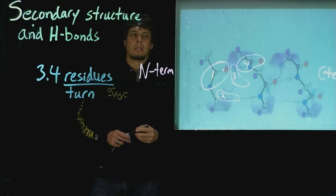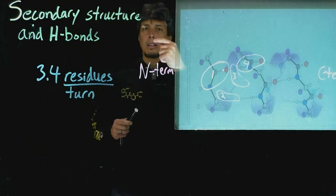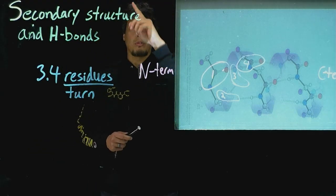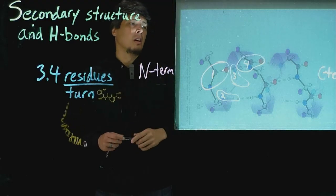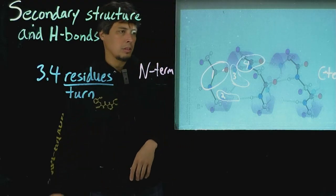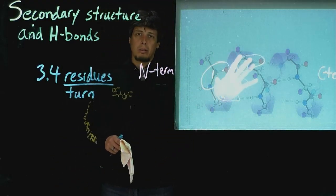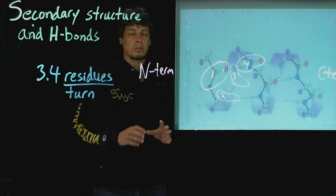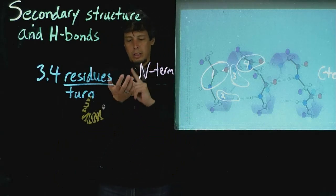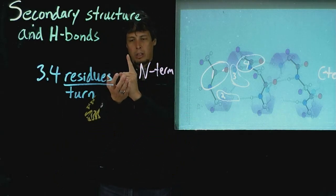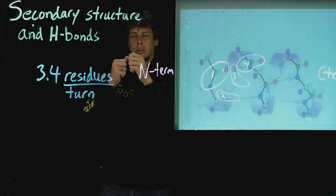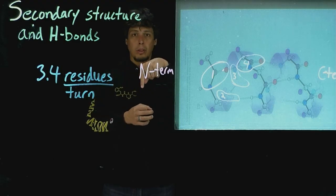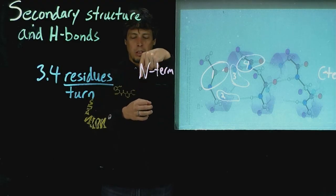So each turn of an alpha helix is 3.4 residues. That's the hydrogen bonding within there. Other things that are important about this alpha helical structure is that the way the alpha helix wraps, there isn't any space in the middle of the cone.